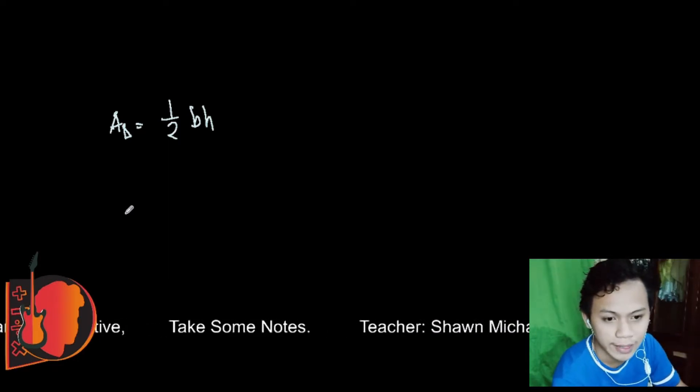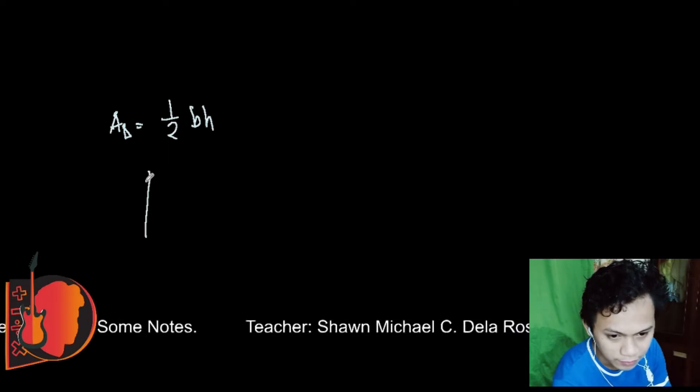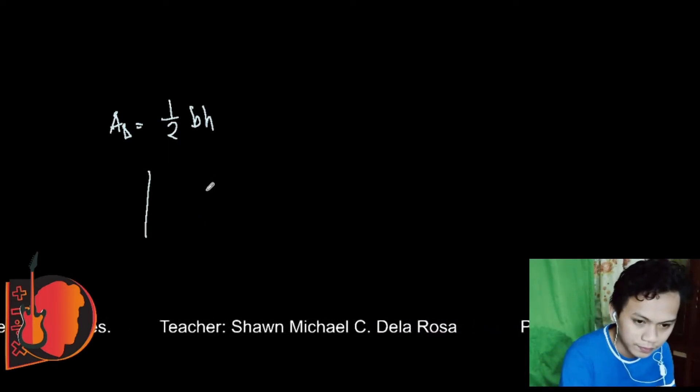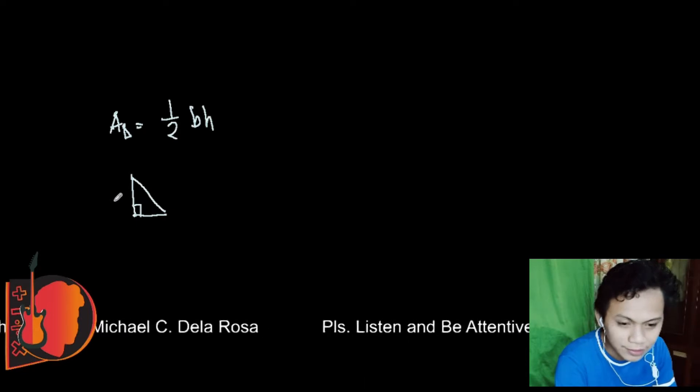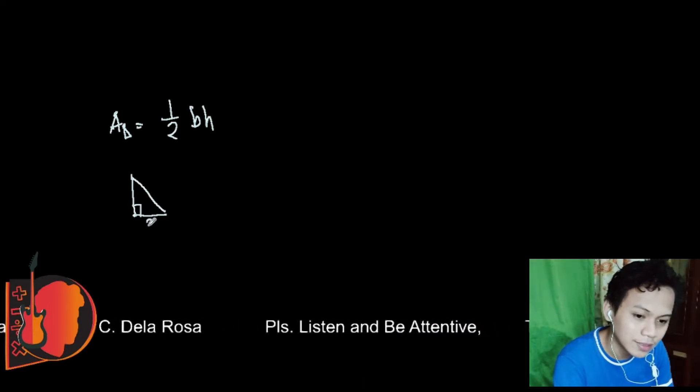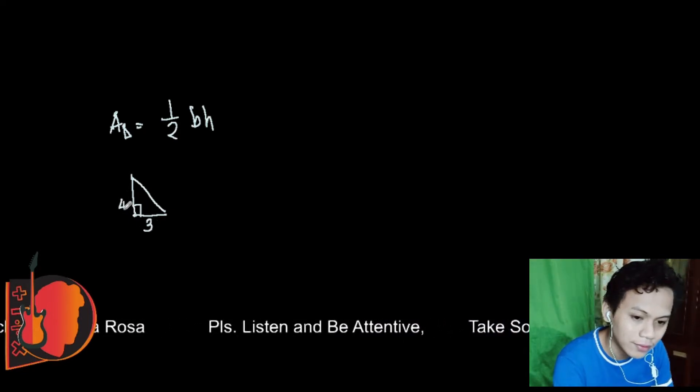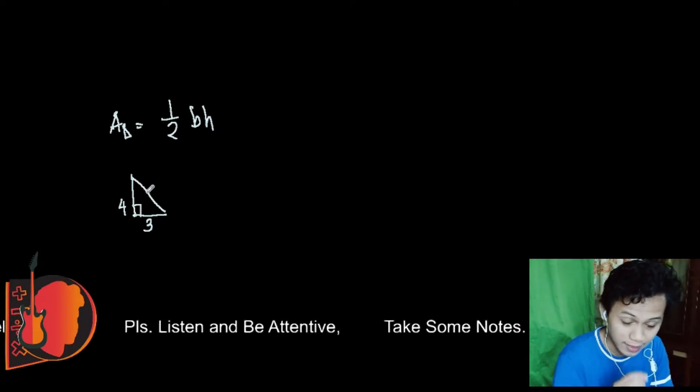The formula is not only for right triangles but for every triangle given the height and base. For example, here is a right triangle with base 3 and height 4. What is the area?